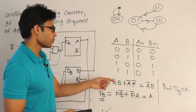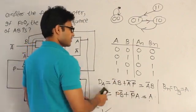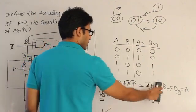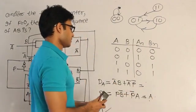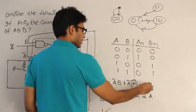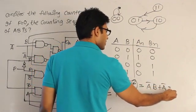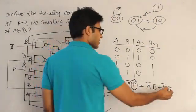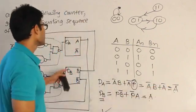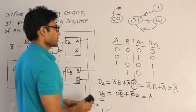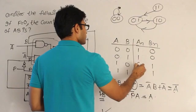Actually, I made a small mistake. If P=0 then P' = 1, so DA = A'B + A'·1 = A'(1 + B) = A'·1 = A'. Therefore DA = A', which means An = A', giving the complement column: 1, 1, 0, 0.